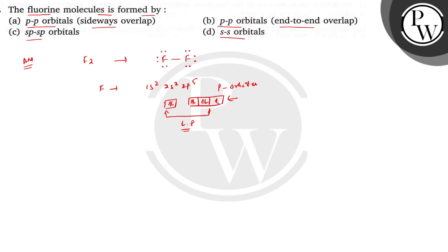The p orbitals are involved between two fluorine atoms, so the overlapping should be end-to-end overlapping between the pz orbitals. This overlapping should be end-to-end overlapping between the p orbitals.